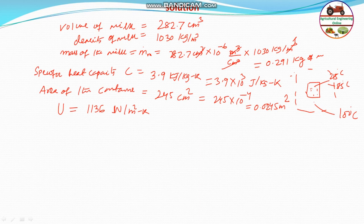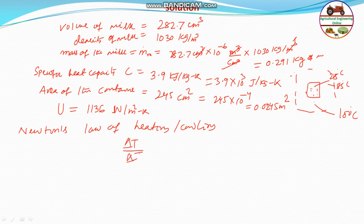Now applying Newton's law of heating or cooling. The equation is: ΔT = ΔT₀ · e^(−αt), where ΔT₀ is the initial temperature difference at the start of heating.